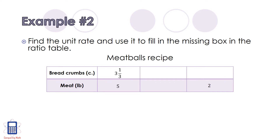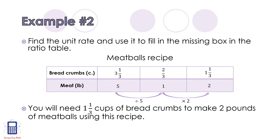Our job in example number 2 is to find the unit rate and use it to fill in the missing box in the ratio table. We have a meatball recipe that requires 3 and 1 third cups of breadcrumbs for every 5 pounds of meat. We can start by finding the unit rate where we have 1 pound of meat, so we need to divide by 5. Now 3 and 1 third cups divided by 5 is 2 thirds of a cup. Now that we have the unit rate we can find out how many cups of breadcrumbs are required to make 2 pounds of meatballs — we multiply by 2 and get 4 thirds cups, which is 1 and 1 third cups. So you will need 1 and 1 third cups of breadcrumbs to make 2 pounds of meatballs using this recipe.